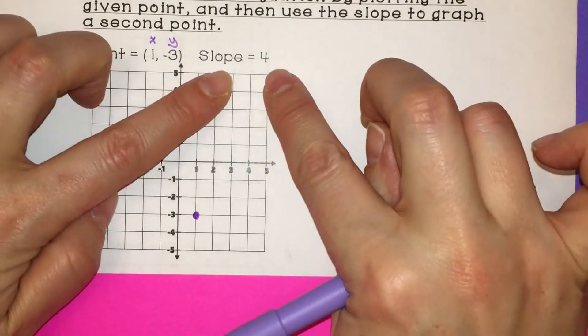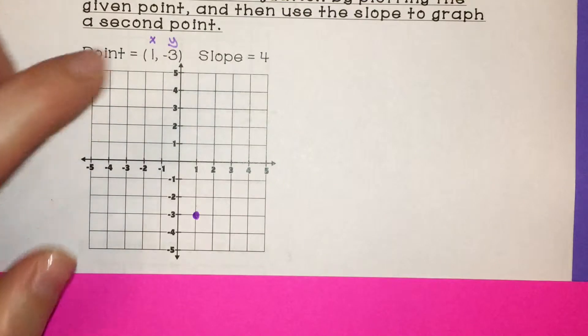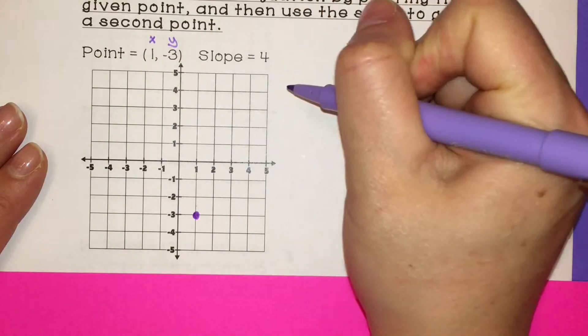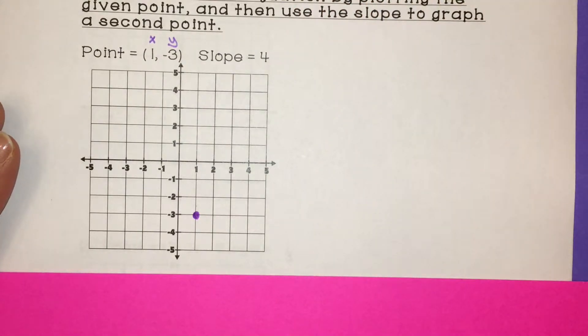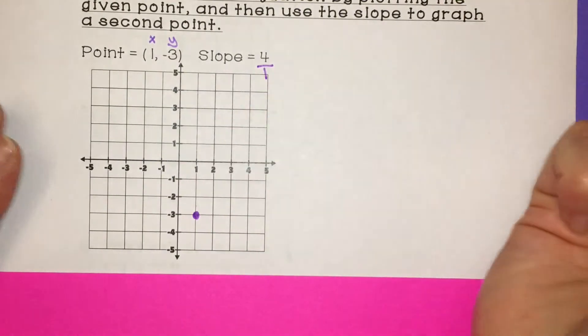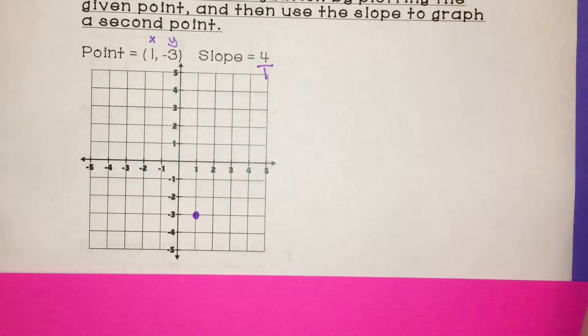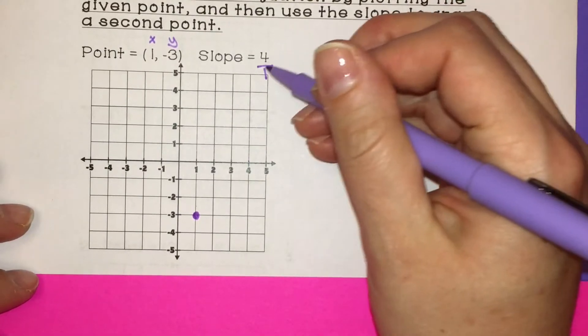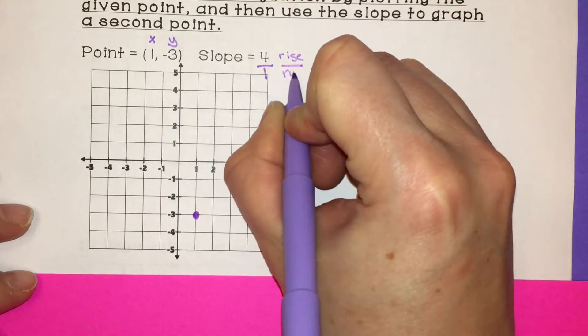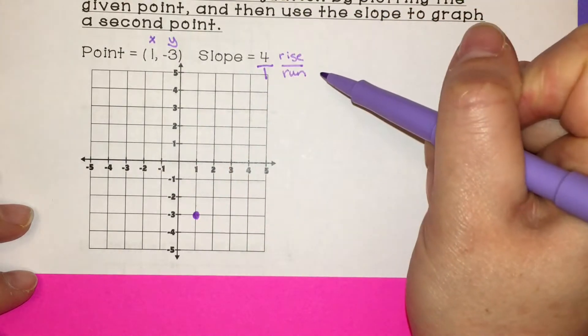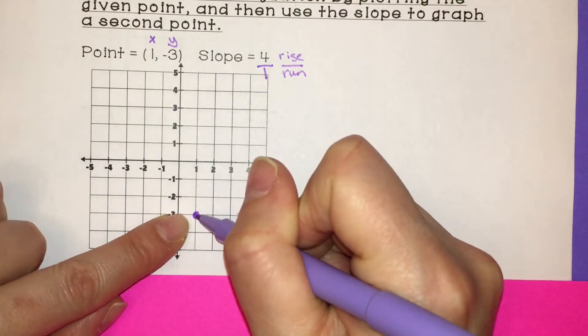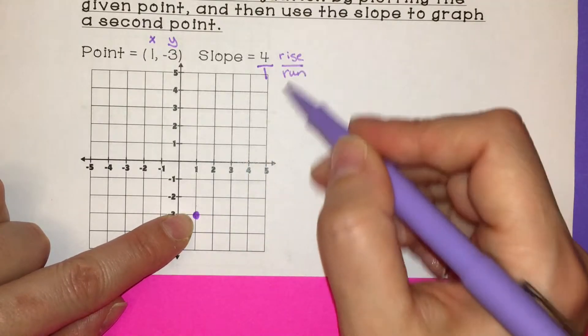Now from there, we're going to use the slope. Well, I said we wanted to use it in rise over run form, but we just have one number. We don't have a rise over a run. So we have to make our whole number into a fraction. Anytime you have a whole number to make it into a fraction, just put a 1 below it. Because 4 divided by 1 is 4, so it doesn't change the value. Now it's in rise over run form. So we know we're going to rise 4, run 1. And we have our point that we were given, so that's where we're going to start from. From that point, we're going to use the slope.